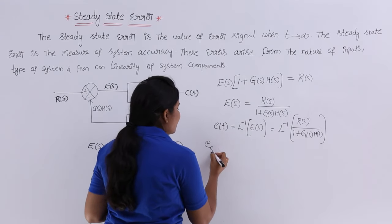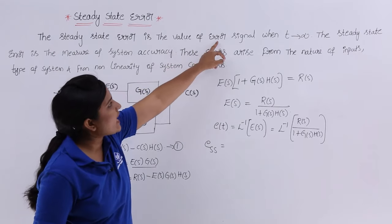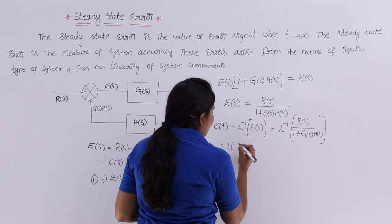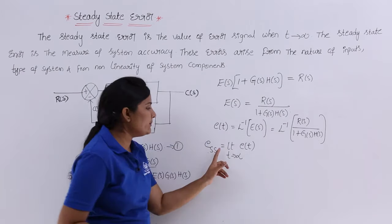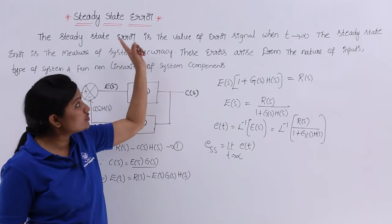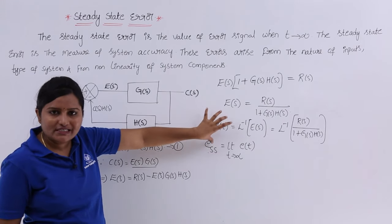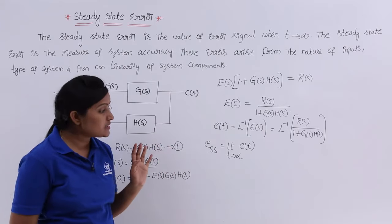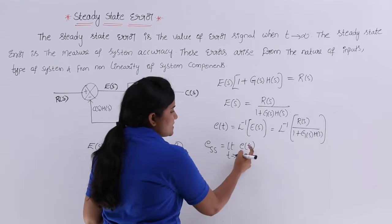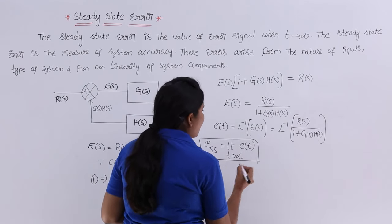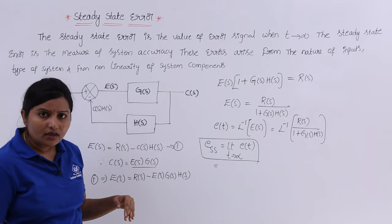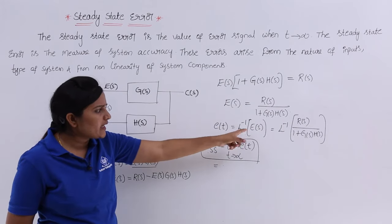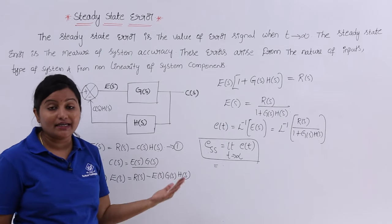The steady-state error is the value of the error signal when T tends to infinity. So steady-state error, denoted E_ss, is: limit as T→∞ of e(T). This is a very important formula. If they give you E(s) rather than e(T), to use this formula you would need to take the inverse Laplace transform first and then substitute T→∞.